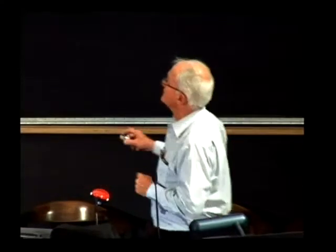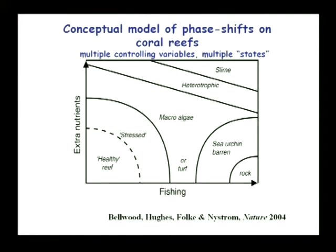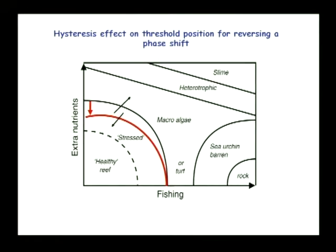This is a well-known diagram. The authors identified several alternate states that a coral reef system can be in, depending on the controlling slow variables of fishing and extra nutrients coming into the system. The healthy to stressed transition is a reversible shift — that's why they've got a dotted line. But the shift to macroalgae was the irreversible one. Once you've gone from the healthy into the macroalgae phase, you can't come back. The hysteretic effect means you'd have to bring nutrients way much lower than what caused the flip in order to recover.